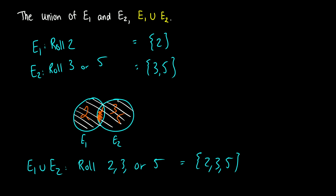For example, if E3 = {1, 2} and E4 = {2, 3}, and we want the union of E3 and E4, it doesn't matter how many times two comes up — if it's in there, we just write it once. So the union is {1, 2, 3}. In other words, we're not double counting.